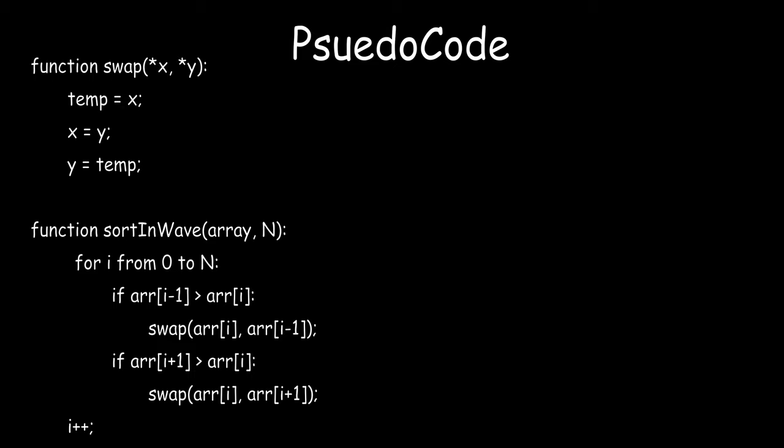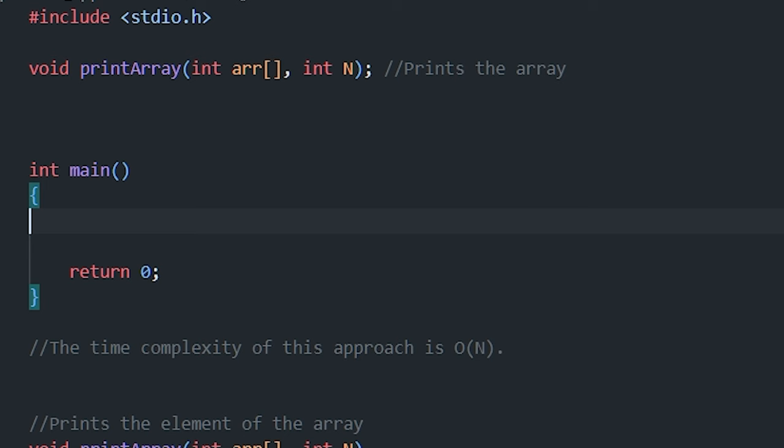For the pseudocode of the second method, similar to before we have a swap function. We implement the sort_in_wave function with a for loop traversing from 0 to n, incrementing by 2 to visit only even-positioned elements. Inside the loop, one if condition checks whether the current element is smaller than its previous element — if true, swap them. Another if condition checks whether the current element is smaller than the next element — if true, swap them.